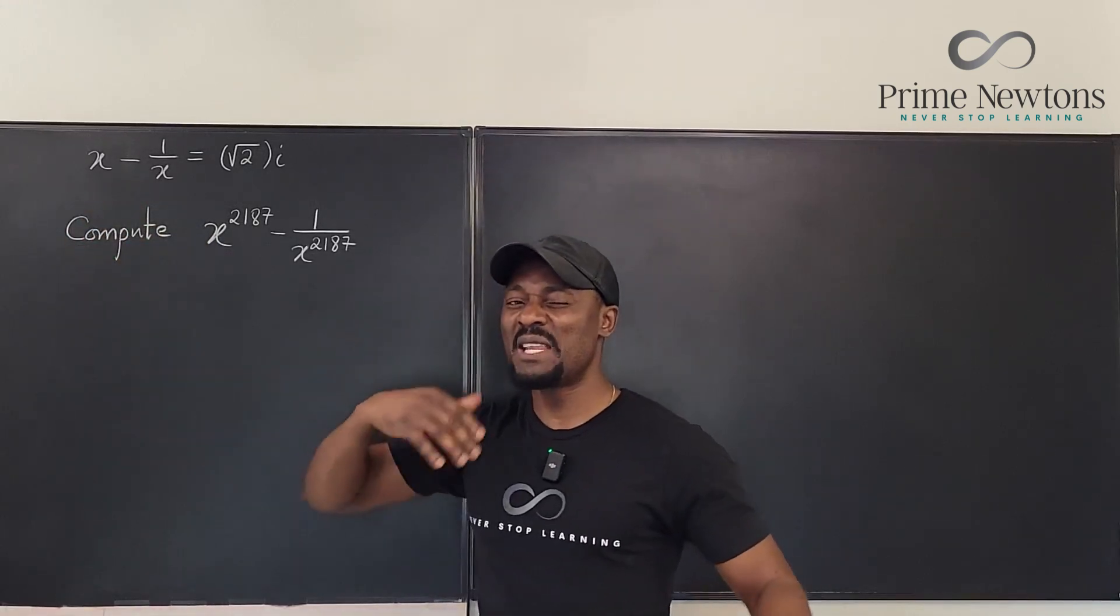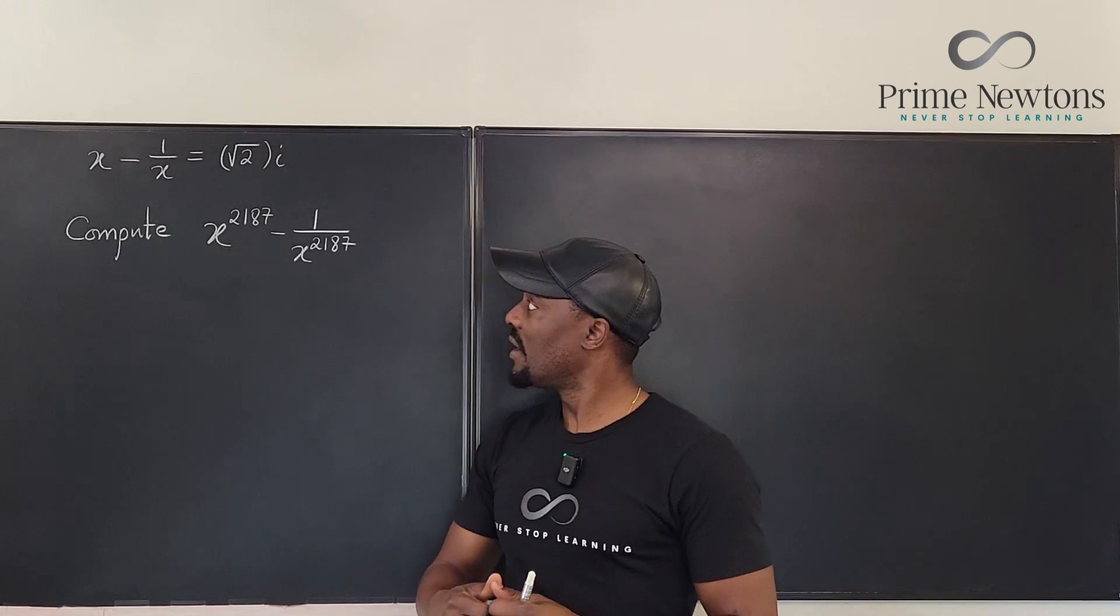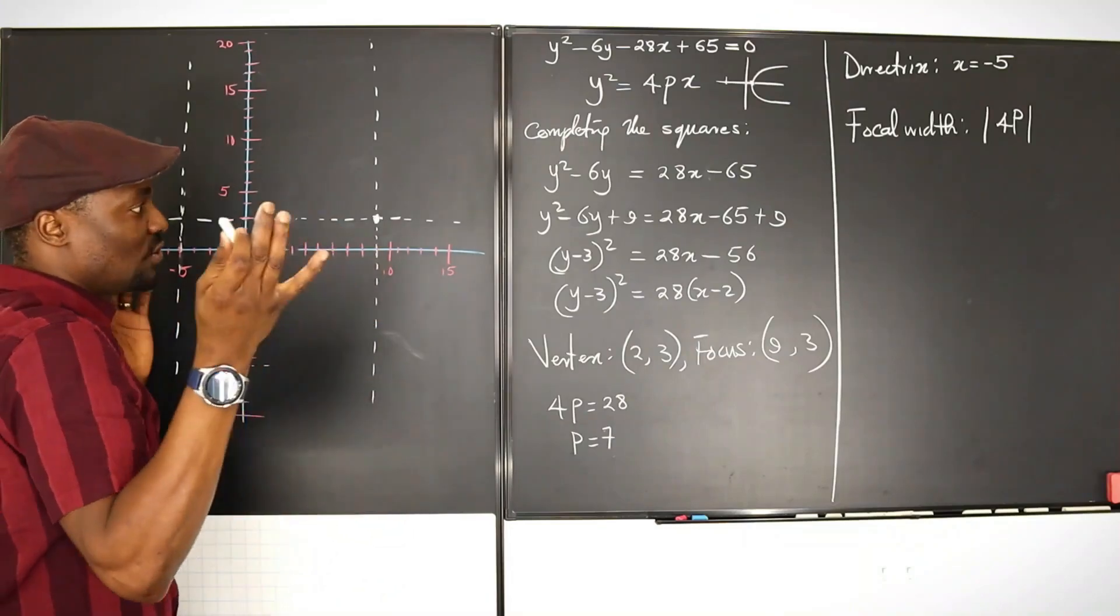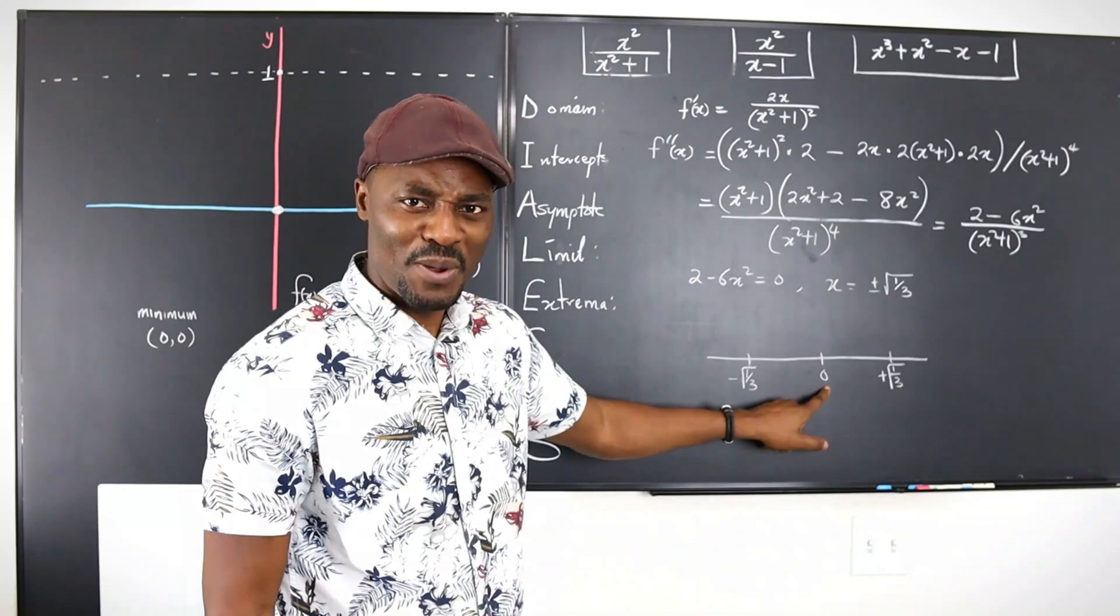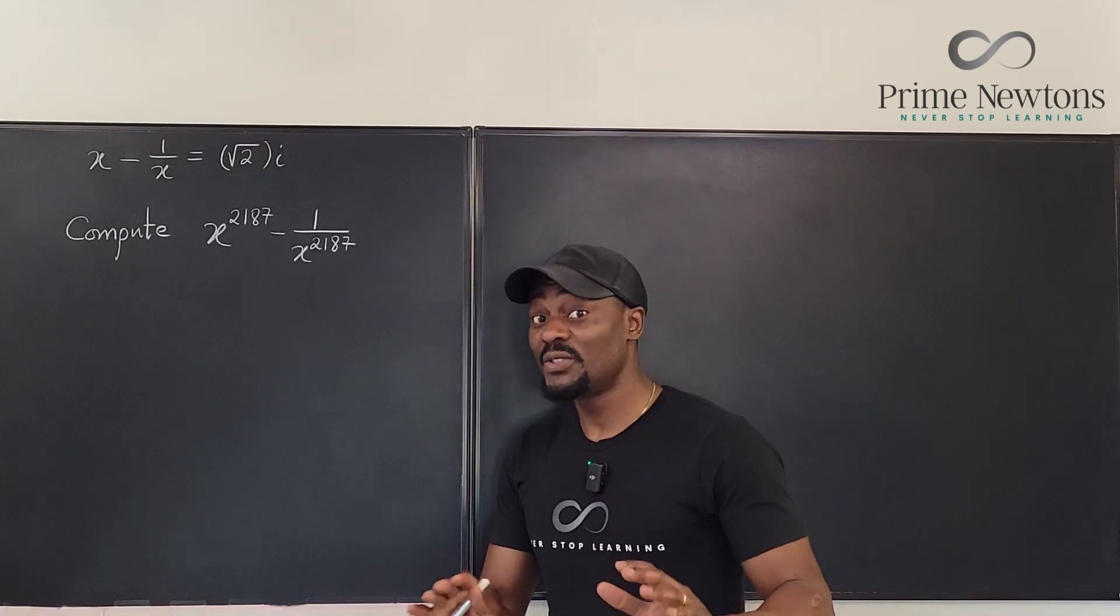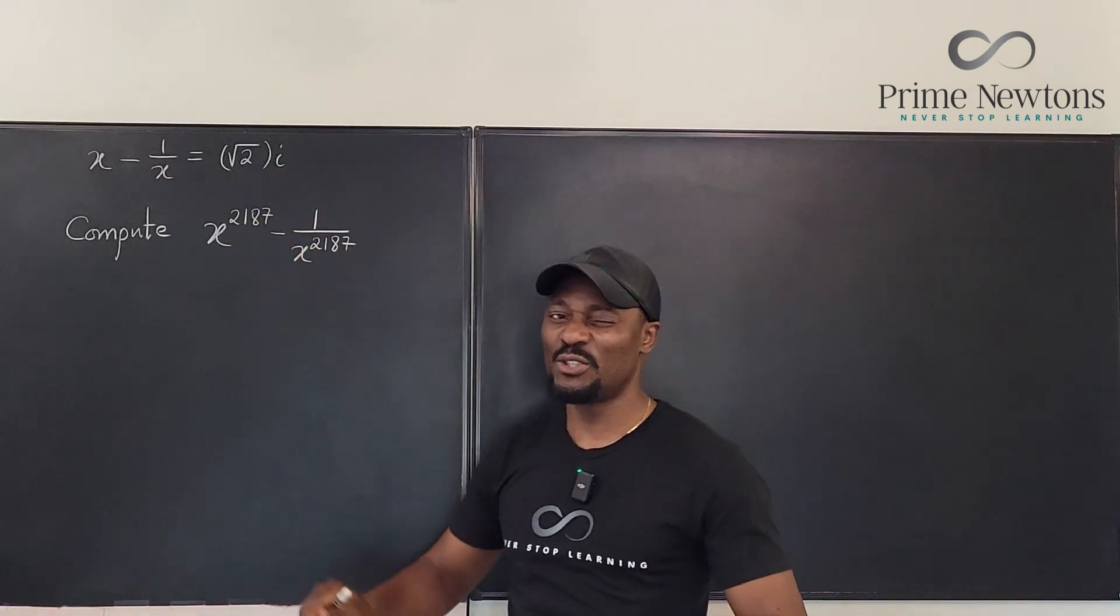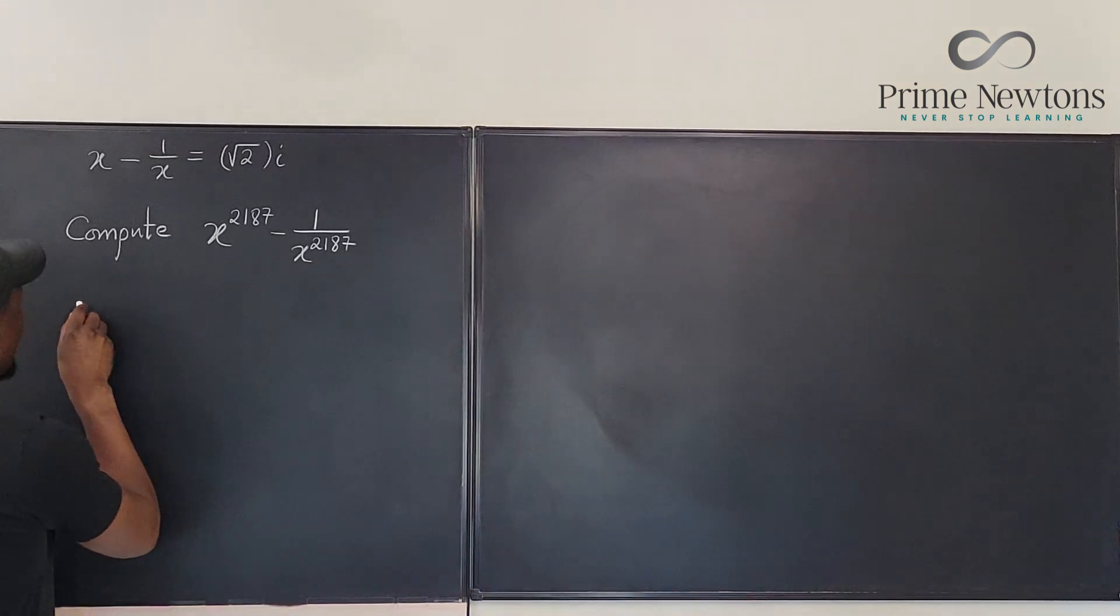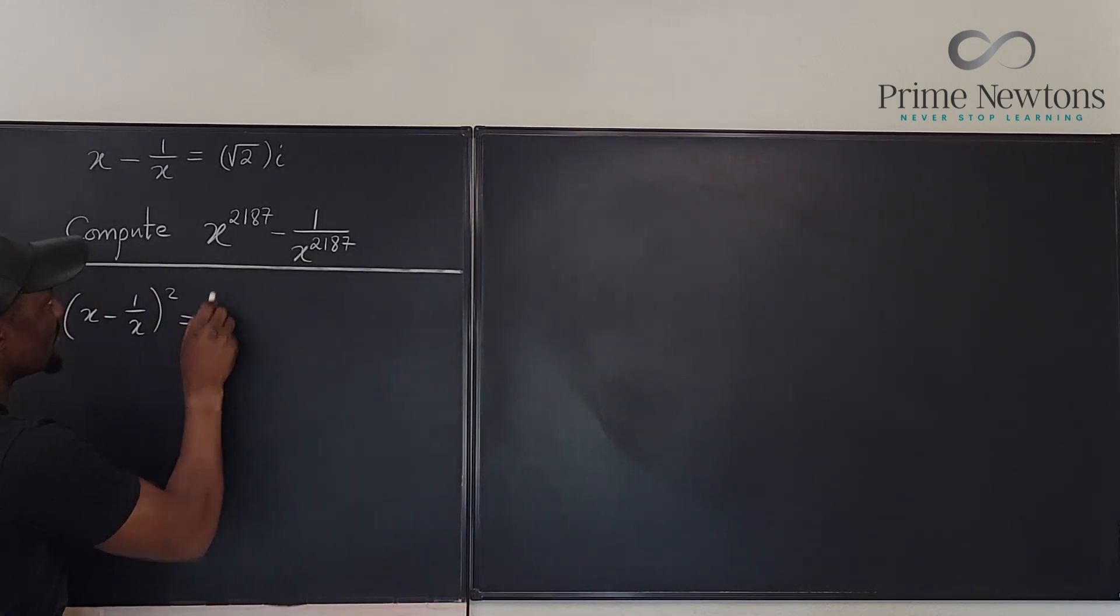Let's get into the video. The first thing you want to do whenever you get this kind of expression with the value on the right-hand side is to multiply—just smash both of them together. So what we're going to do first is say that x minus 1 over x squared, let's put a line here, will be equal to this square.